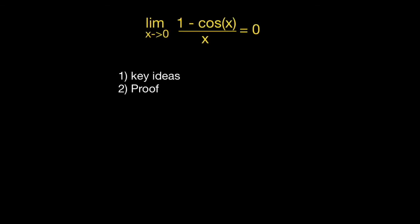Hello, in this video I want to show you how to prove that the limit as x approaches 0 of 1 minus cosine of x all over x is equal to 0.